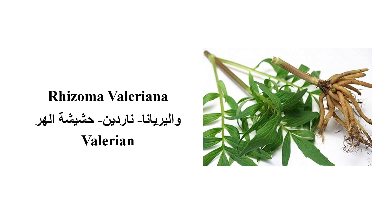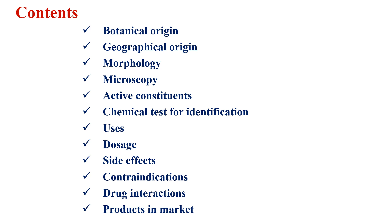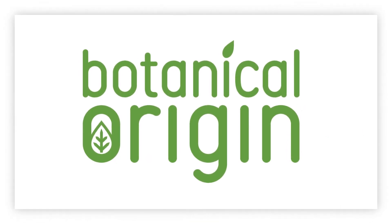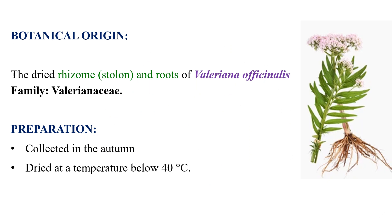Valerian is known in Arabic as valeriana, nardine, or hashish al-her. In this lecture I'm going to discuss the following topics: botanical and geographical origin of valerian, morphology and microscopical investigation, active constituents, chemical tests, uses, dosage, side effects, contraindications, drug interactions, as well as products available in the markets.